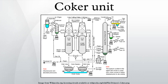A coker or coker unit is an oil refinery processing unit that converts the residual oil from the vacuum distillation column or the atmospheric distillation column into low molecular weight hydrocarbon gases, naphtha, light and heavy gas oils, and petroleum coke.